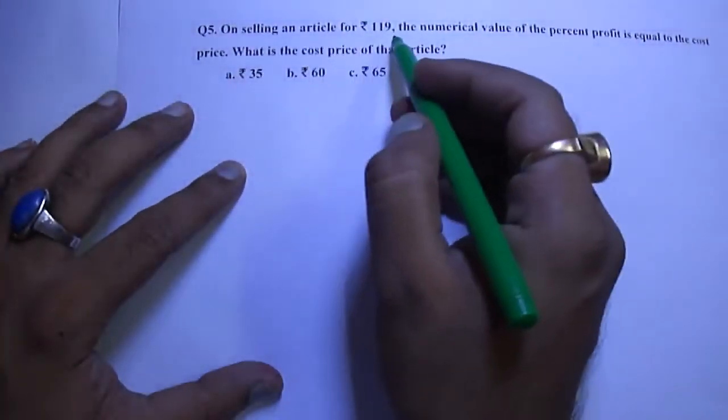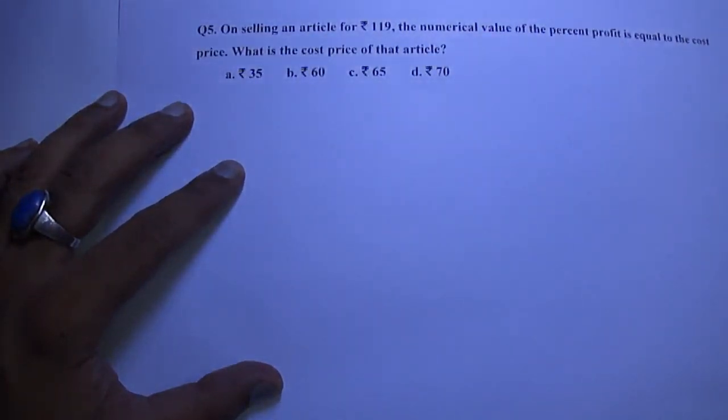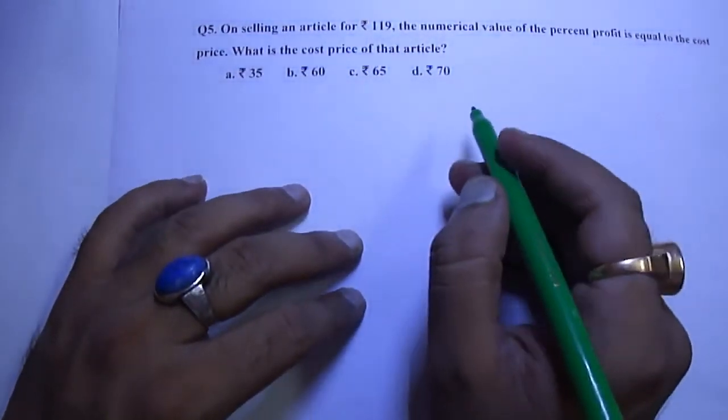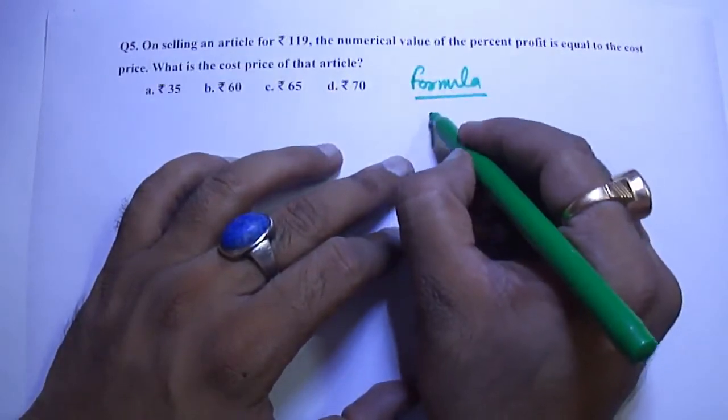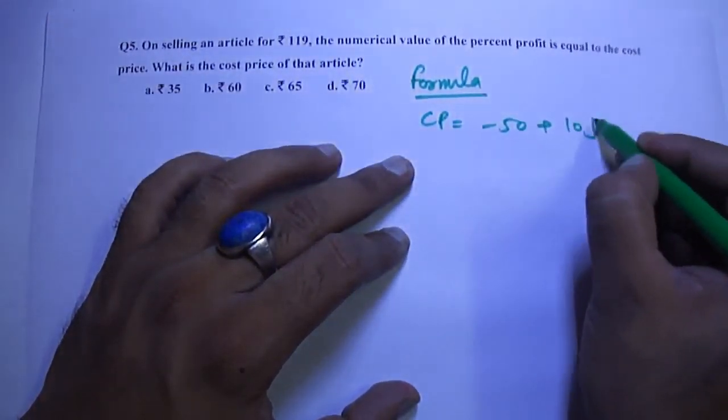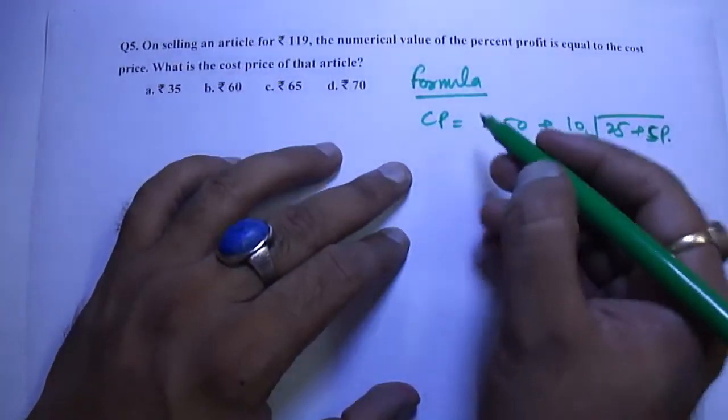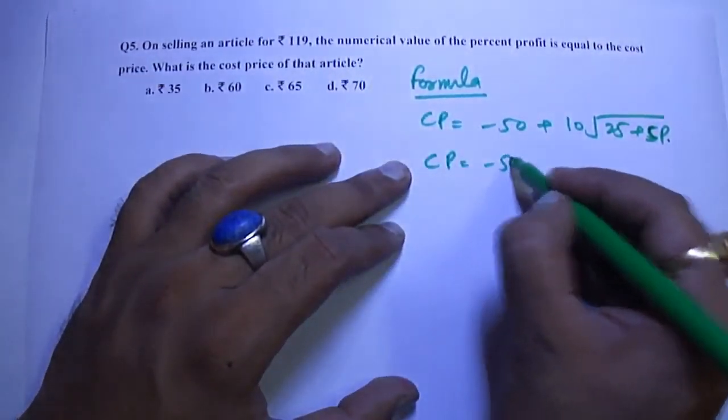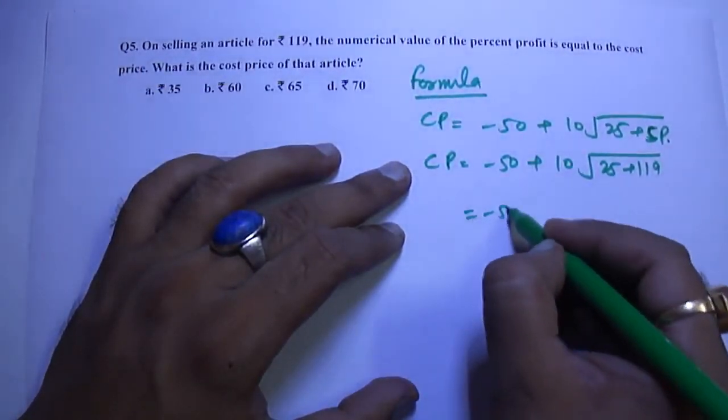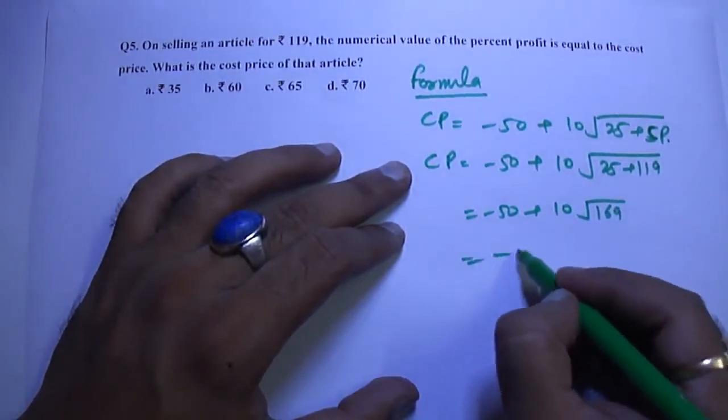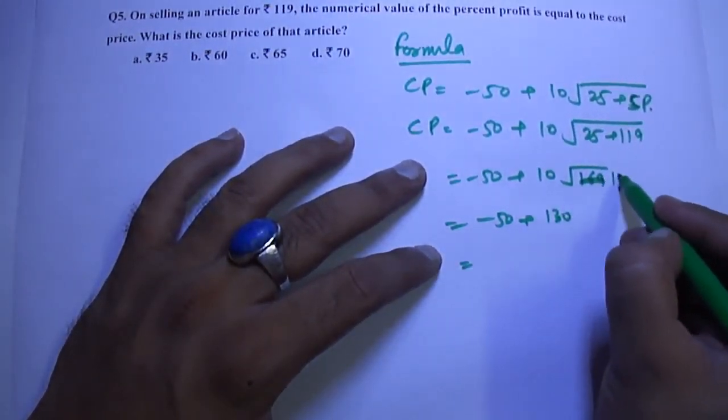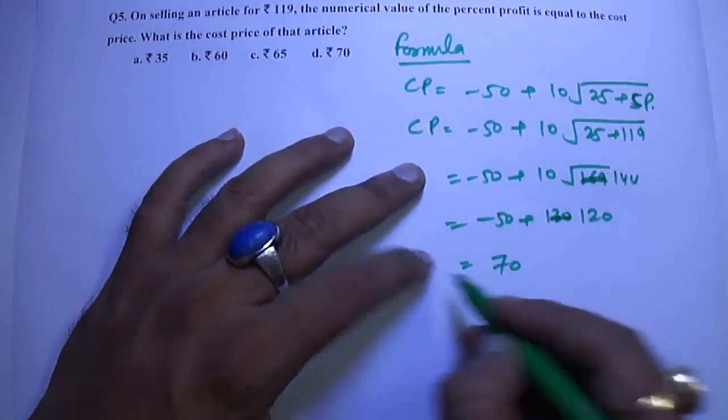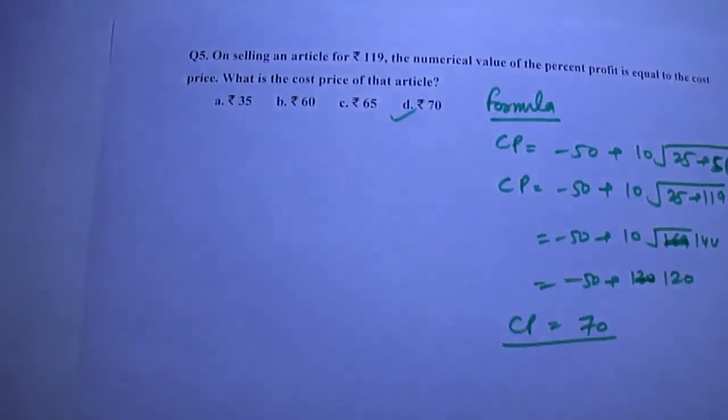Next question. On selling an article for Rs.119, the numerical value of the percent profit equals the cost price. What is the cost price of that article? There are several methods for solving these types of questions. First of all, formula. Formula for CP is equal to minus 50 plus 10 times square root of 25 plus SP. In this case, selling price is 119. So putting this value plus 10, 25 plus 119. It is plus 10 times square root of 169 minus 50 plus 130. Sorry, this is 144. So answer is 70. CP would be 70. Our answer is D.